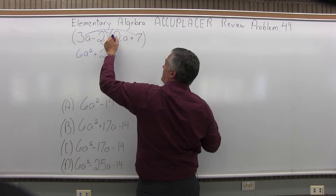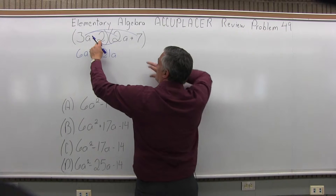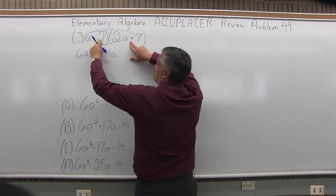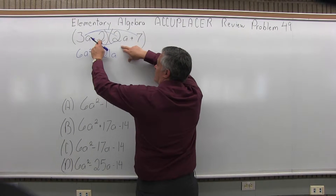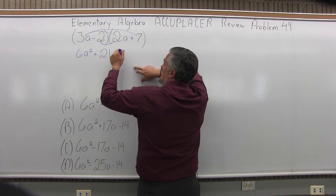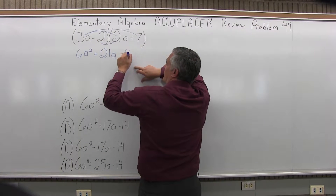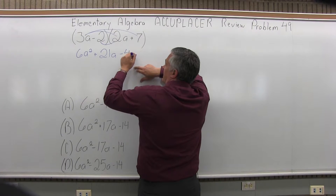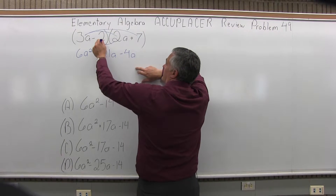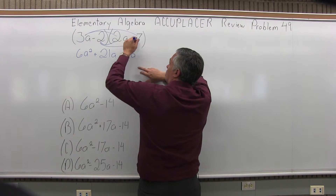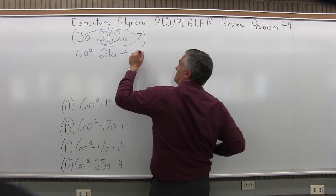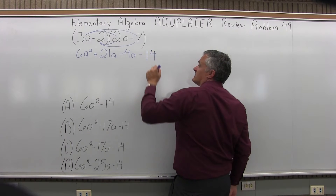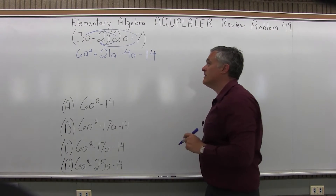Next, negative 2 times 2a: the negative 2 times positive 2 will be negative 4, and I just have an a. And then finally negative 2 times positive 7 will be minus 14.